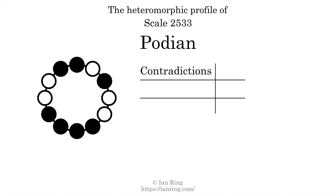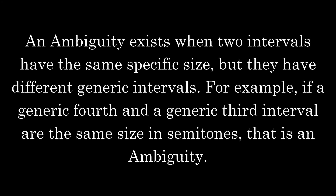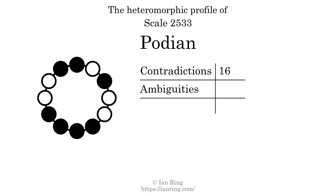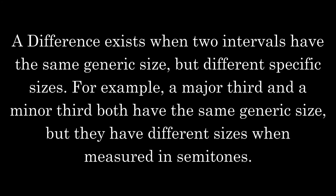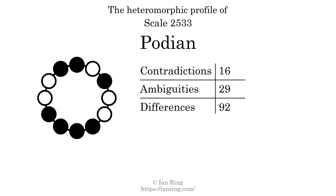The number of contradictions in this scale is 16. An ambiguity exists when two intervals have the same specific size, but they have different generic intervals. For example, if a generic fourth and a generic third interval are the same size in semitones, that is an ambiguity. The number of ambiguities in this scale is 29. A difference exists when two intervals have the same generic size but different specific sizes. For example, a major third and a minor third both have the same generic size, but they have different sizes when measured in semitones. The number of differences in this scale is 92.